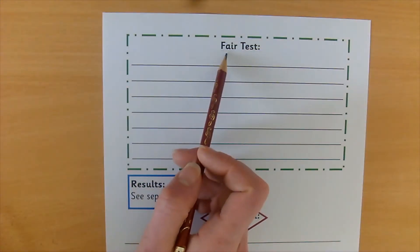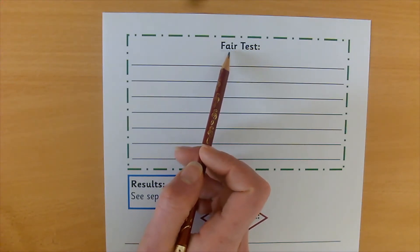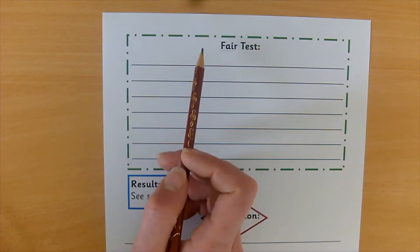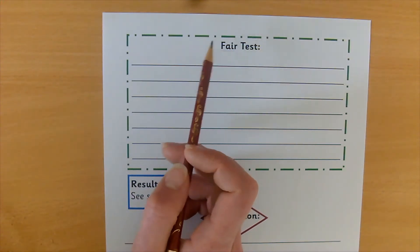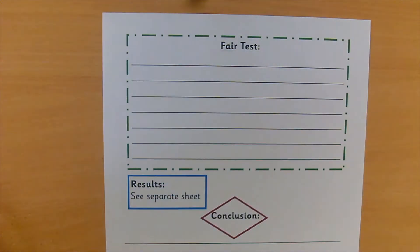So in science, a fair test is all about treating the different materials fairly and making sure that one of them doesn't have an advantage over the others. So to make it a fair test, there are two things that we have to do. And it's normally things that we have to keep the same. So when you did your investigation, what did you have to keep the same for every material to make sure that it was fair? Pause the video and have a think.